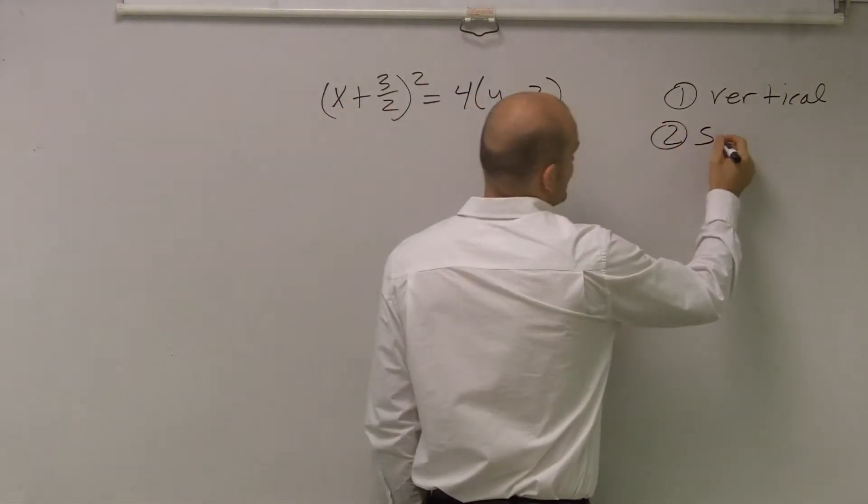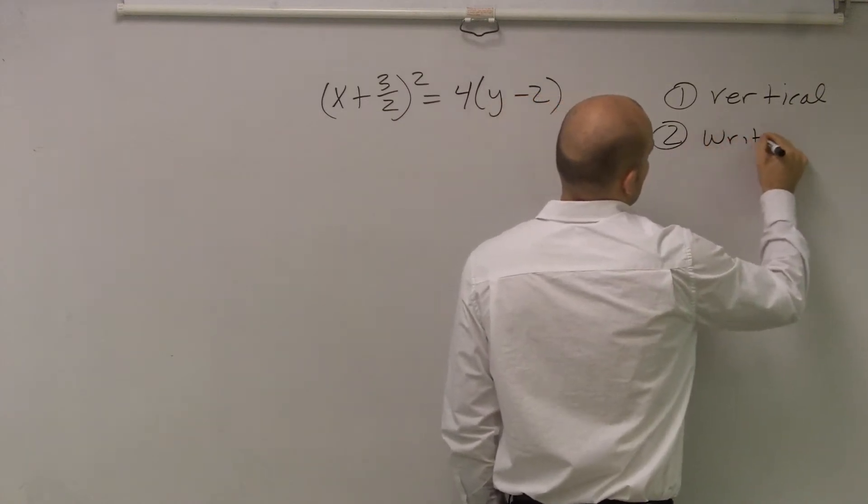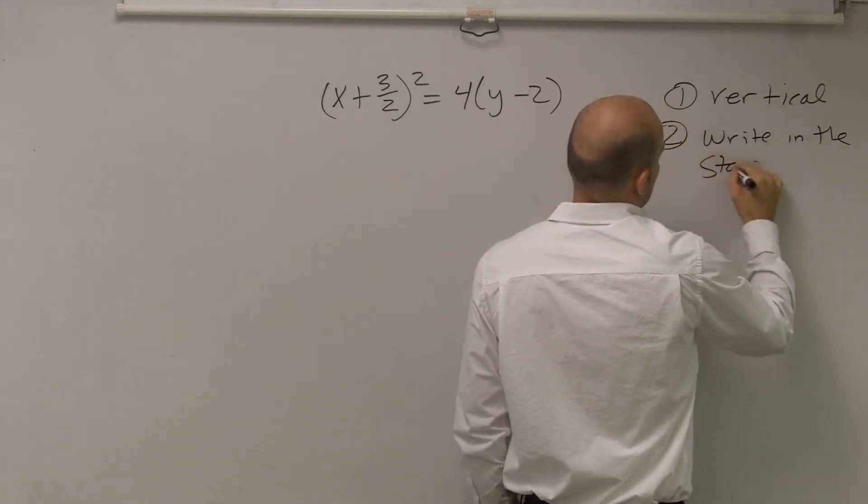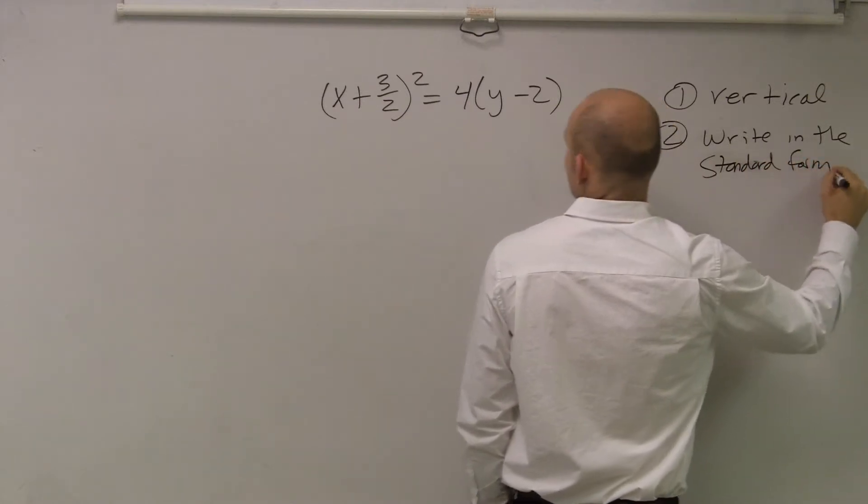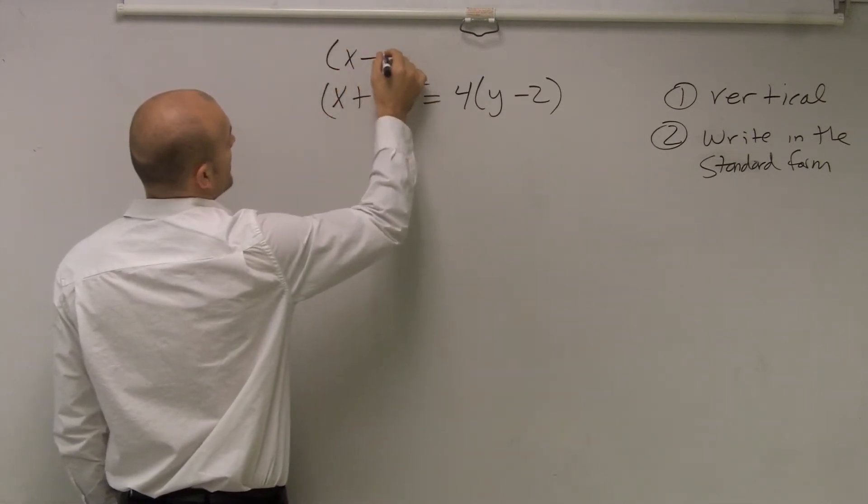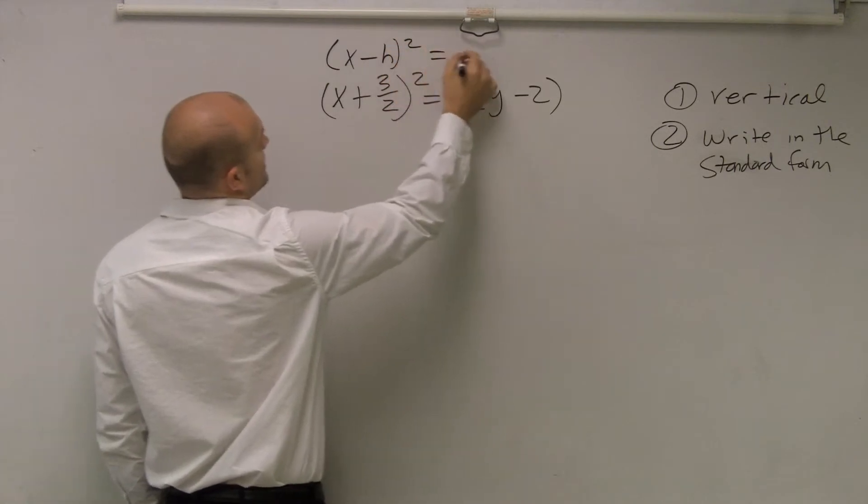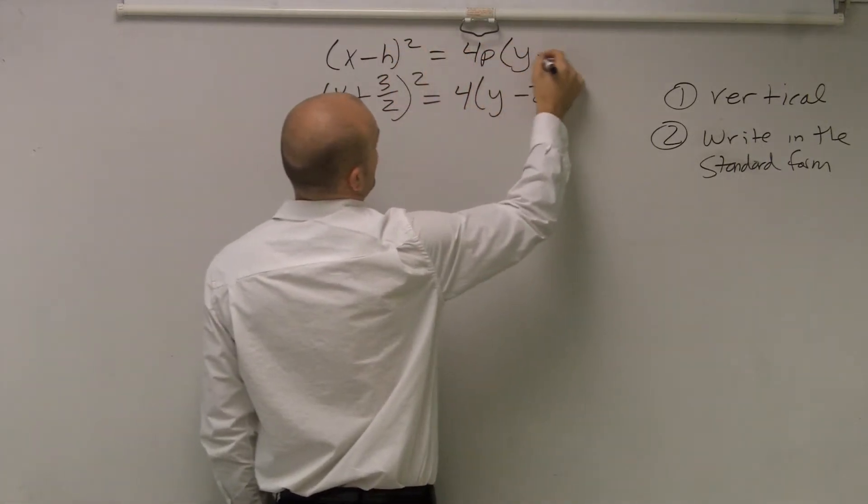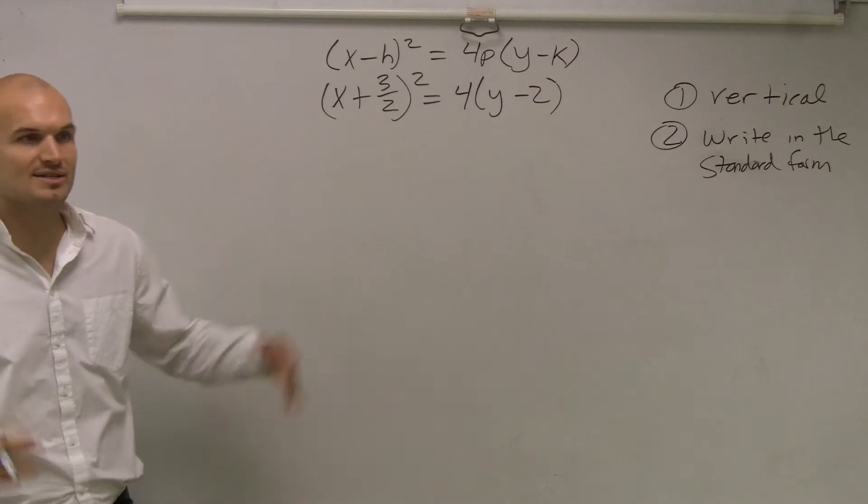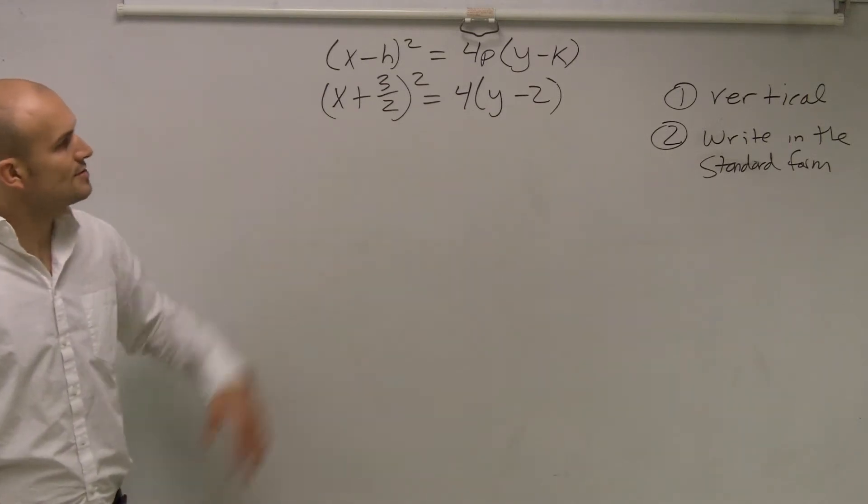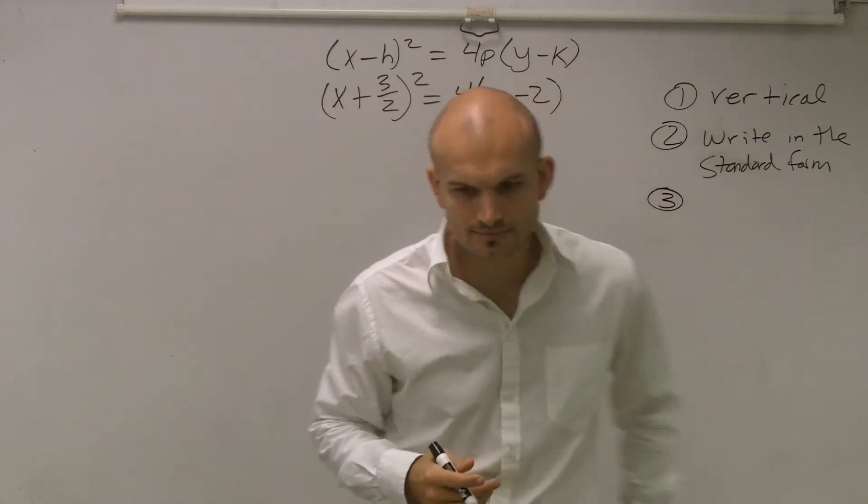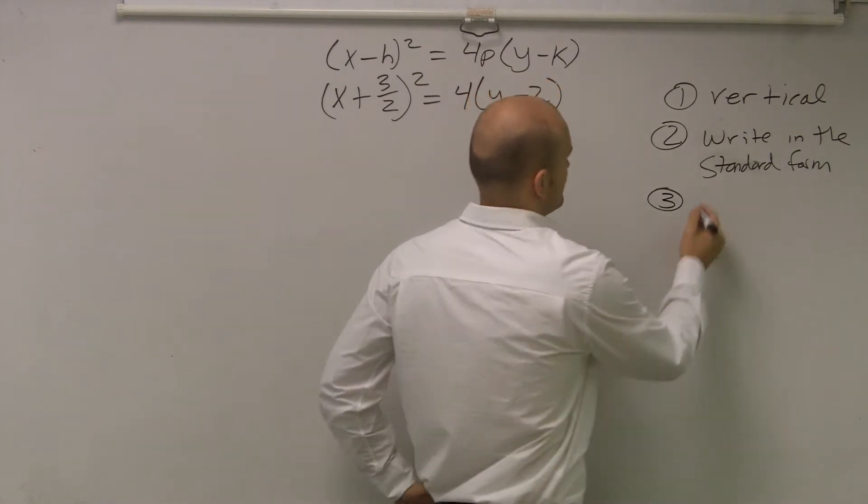The next thing is to write in that form. And is this looking in the standard form? Yeah, it is. And let's just double check what standard form I had. (x - h)² = 4p(y - k). That's our standard form that we wrote down. So it's in the format, so I don't need to change anything like that first problem I did. So now we just need to determine our points, determine our values.